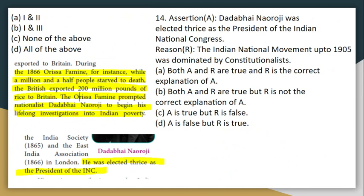Next courtesy question: Dadabhai Naoroji was elected thrice as president of the INC — that assertion is correct. The Indian National Movement up to 1905 was dominated by constitutionalists. The Surat Split happened in 1907, after which moderates and extremists split. However, being elected thrice as president is not the reason constitutionalists dominated up to 1905. So the answer is B — assertion is true, but R is not the correct explanation of A.